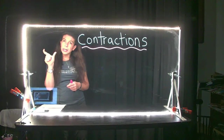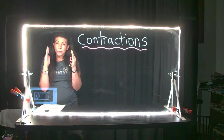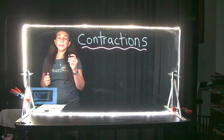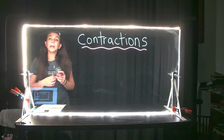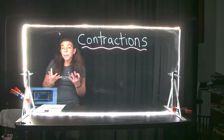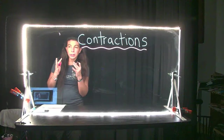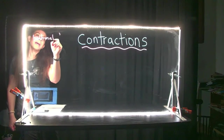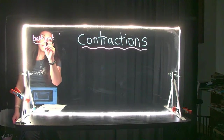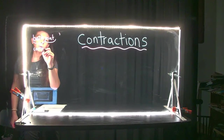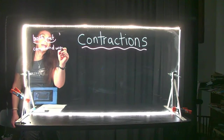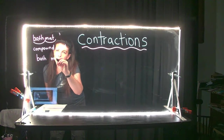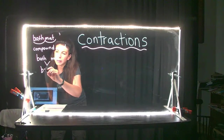A contraction is when you take two words and you shorten them. You put them together and shorten them by taking some letters out and putting in something called an apostrophe. Now, a contraction is different than a compound word. A compound word is two full words put together — for example, the word 'bathmat.' Bath and mat are put together and it becomes one compound word: bathmat.